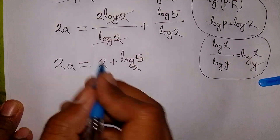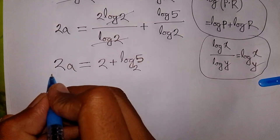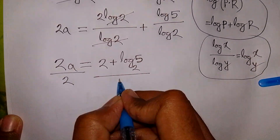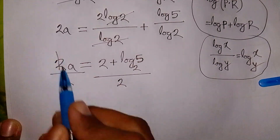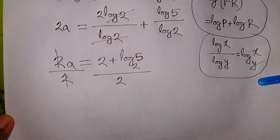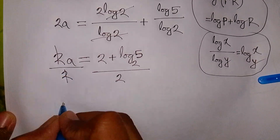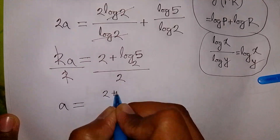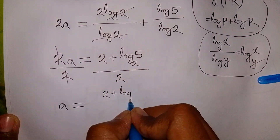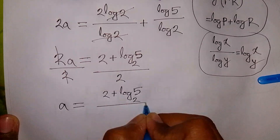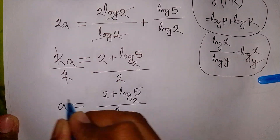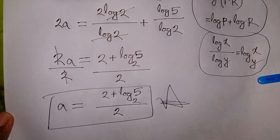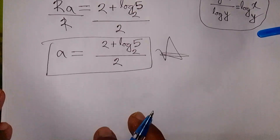Now we divide both sides by 2 because we need the value of A. The 2s cancel, and A will be equal to 2 plus log 5 base 2, all over 2. So this is the value of A — this is our final answer. Now let's check the equation.